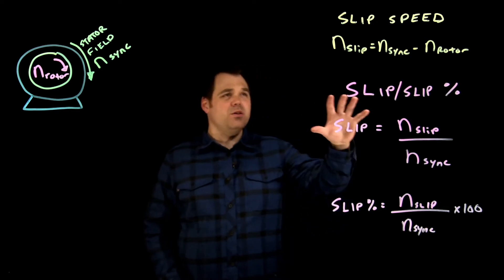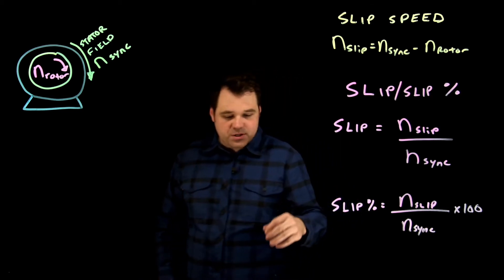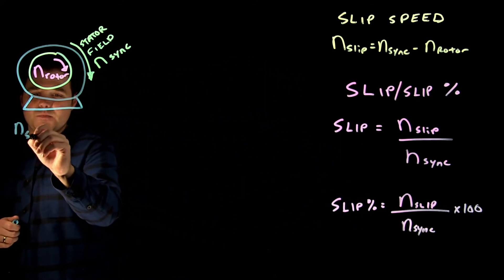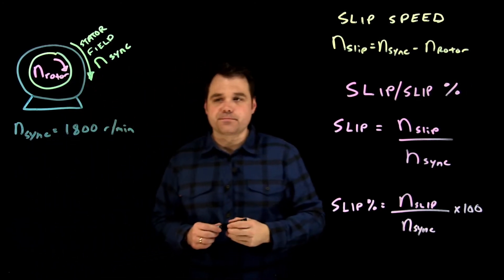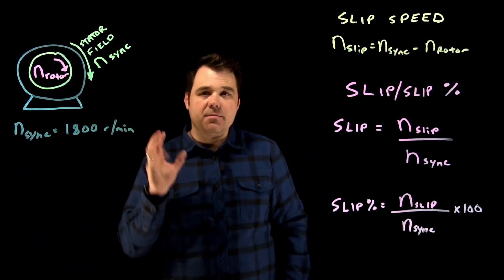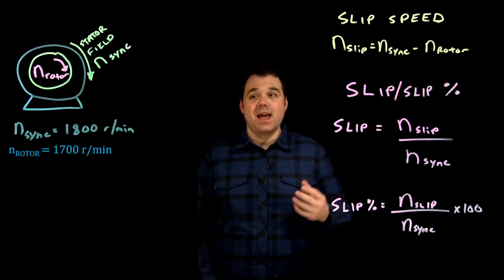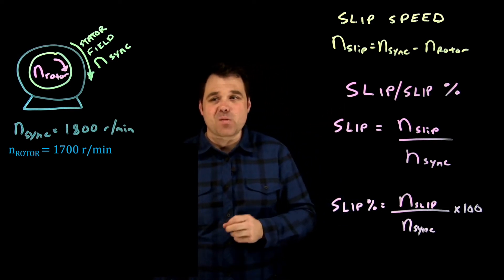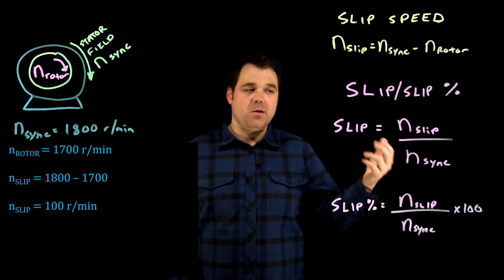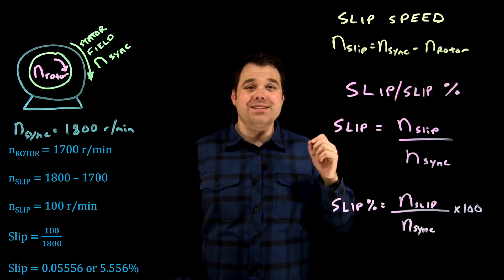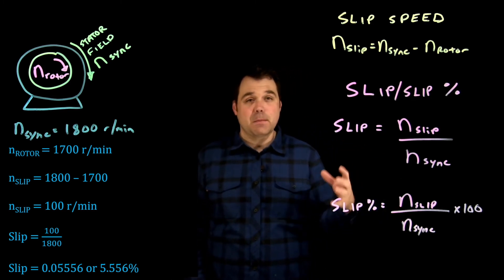Let's do some calculations with slip and slip speed. For example, let's say this motor has a synchronous speed of 1800 revolutions per minute. If the rotor was spinning at 1700 RPM, that would make the slip speed 1800 minus 1700 — 100 RPM. Then that would make the slip 0.05556, or 5.556%.